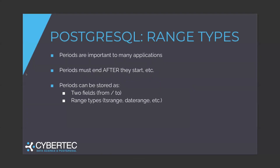So what can Postgres do for you? For quite some time, Postgres has supported something generally known as range types. A range type is a special data type which allows us to store periods. Traditionally, periods are stored as two fields — one field called 'starts' and one field called 'ends' — along with a bunch of check constraints. But this logic can be put into a data type called a range type. It could be a TS range (timestamp range), a date range, or an integer range.